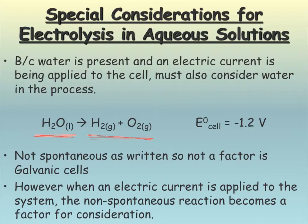So if you look at the electrolysis, the overall electrolysis reaction for water, you see that it has a negative E cell, which means this is not a spontaneous process. This is why it's not a factor for us in our galvanic cells.